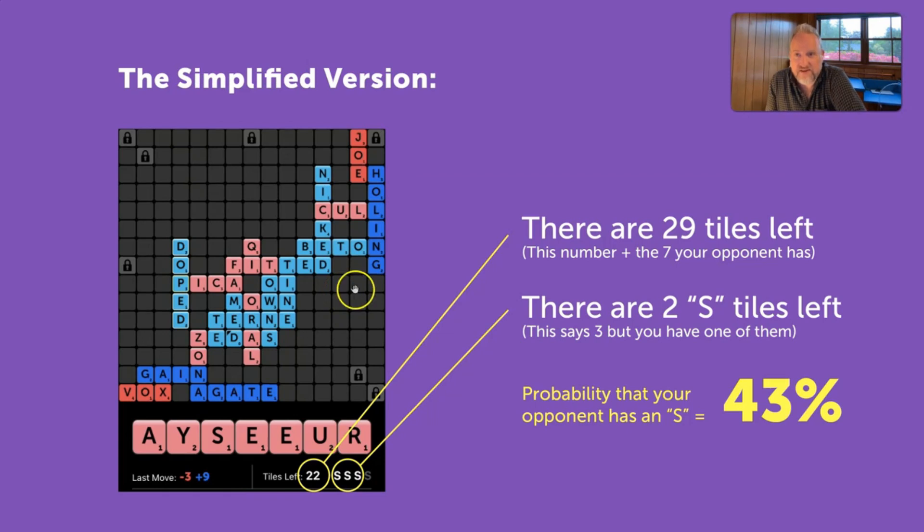So now the simplified version. Again, there are 29 tiles left in this scenario. There are two S's left. So if you run that equation, that shows that there's a 43% chance that your opponent has an S. When I think about this, you can't do the equation on the fly every single move you make. So you need to train yourself to get a general gut feeling for what this number is.